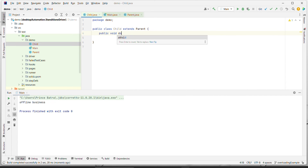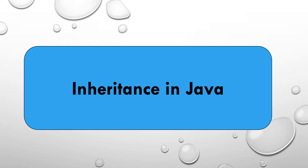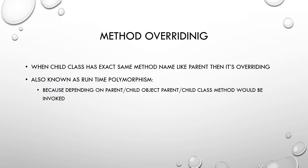For example, the Child can have `public void doingJob` - the child can do a job as well along with the father's business. Now let's understand method overriding. Method overriding is when the child has the exact same method name as the parent - it is also known as runtime polymorphism. We'll come to why it is called runtime polymorphism after understanding how to achieve it.